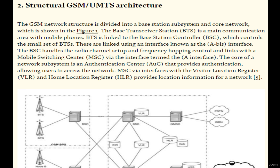The GSM/UMTS service zone is separated into location areas, where every LA incorporates at least one radio cell. Every LA and radio cell has a unique identifier named Cell ID and LAC. The BTS covers a set of cells. The GSM network structure is divided into a Base Station Subsystem (BSS) and a core network, as shown in the figure. The Base Transceiver Station (BTS) is a main component of this architecture.